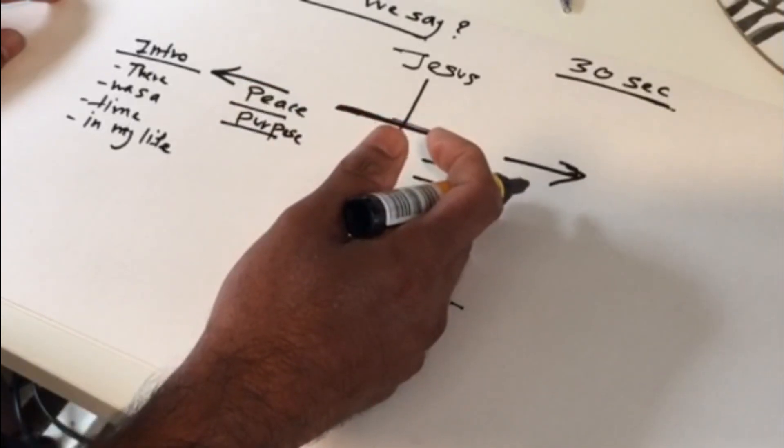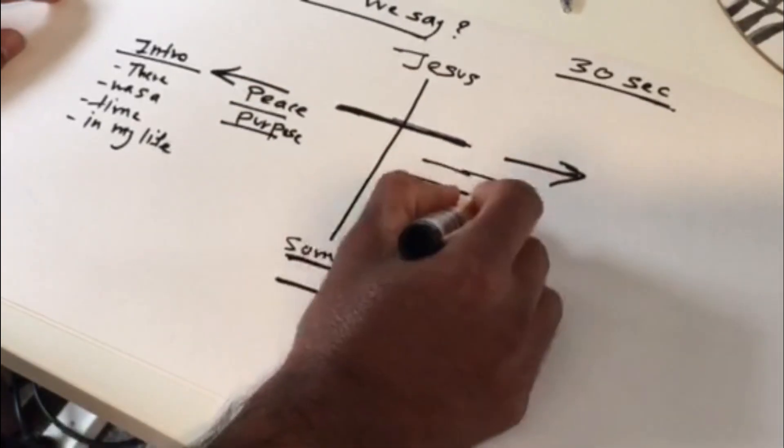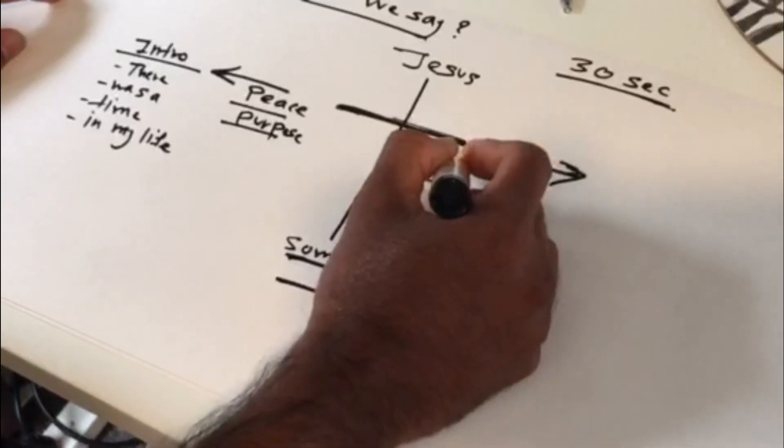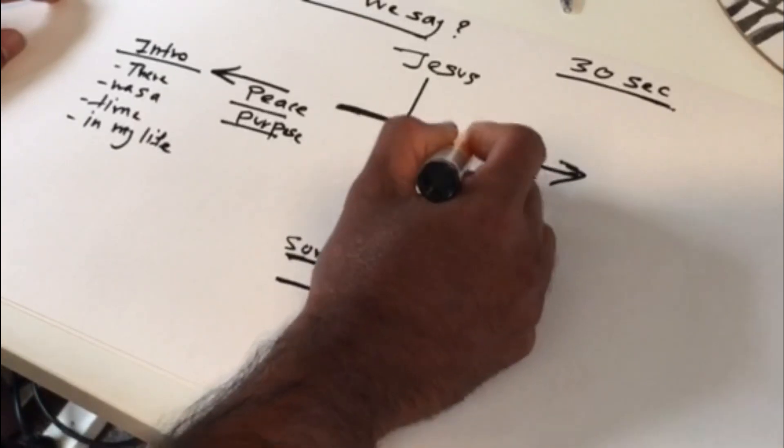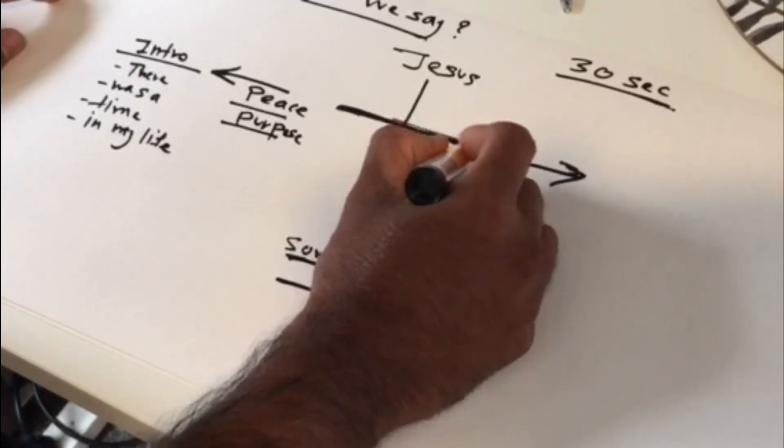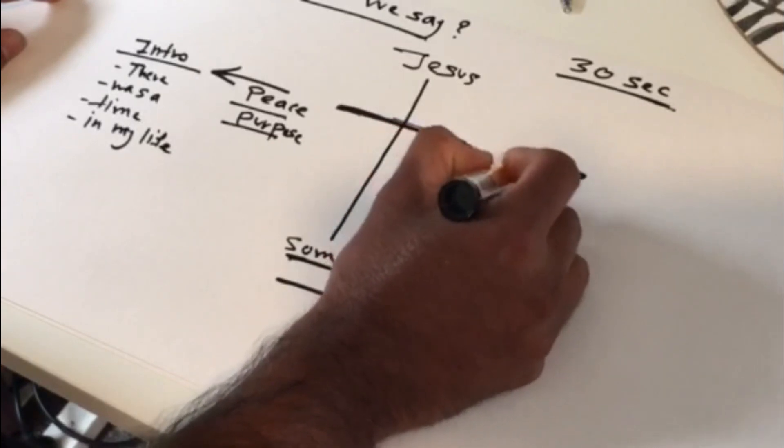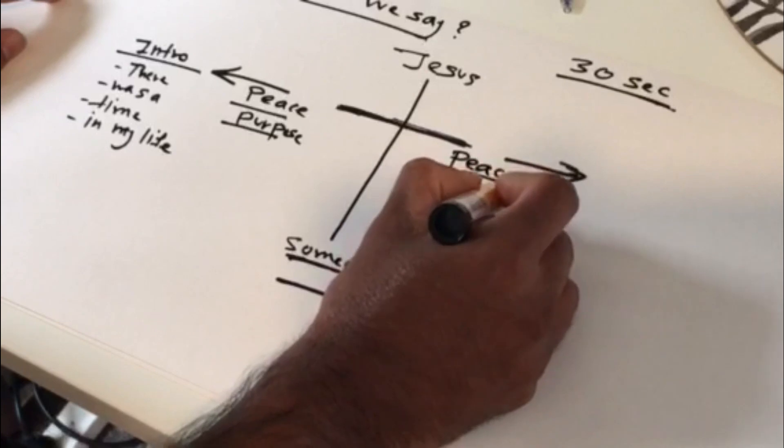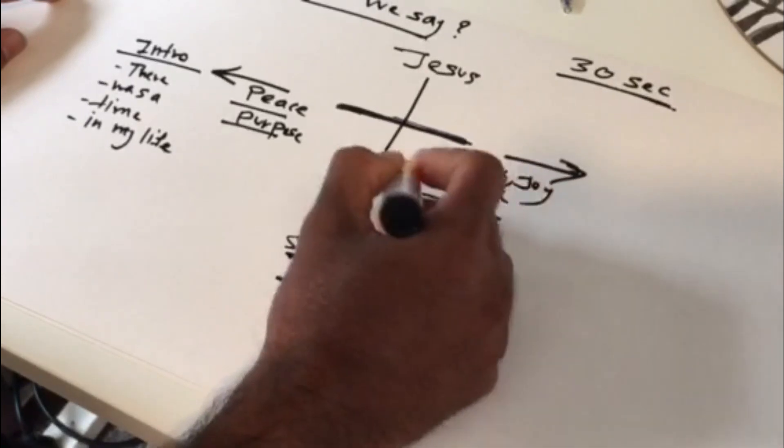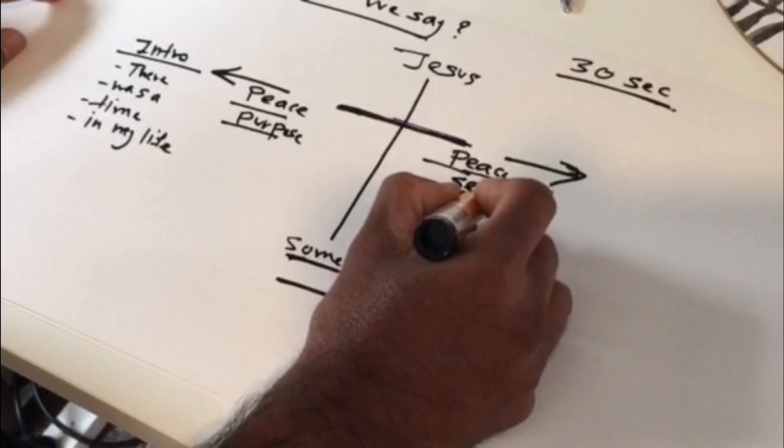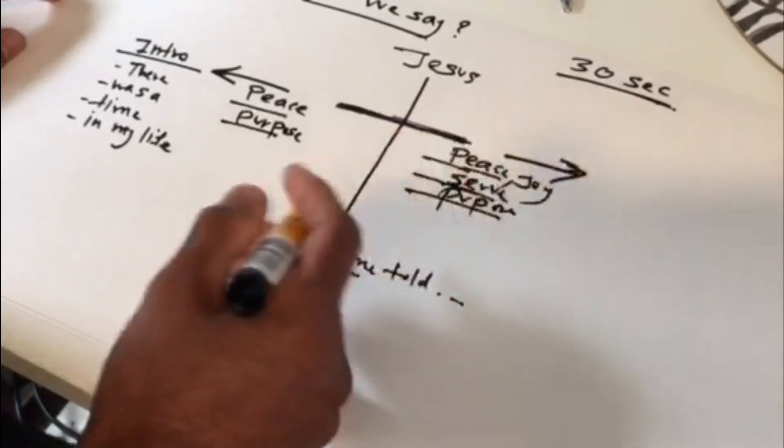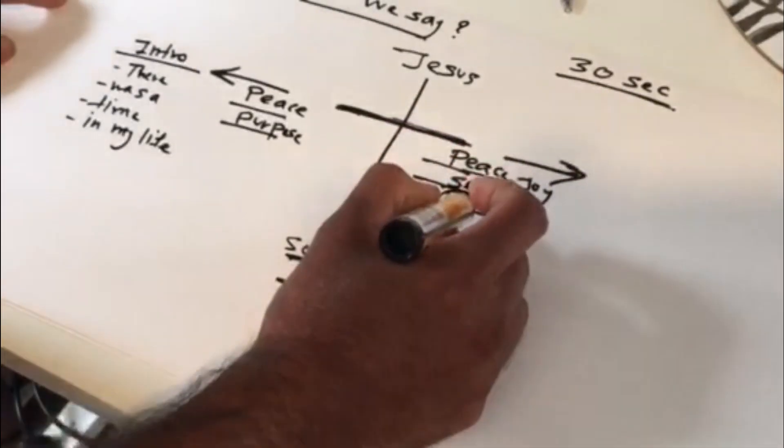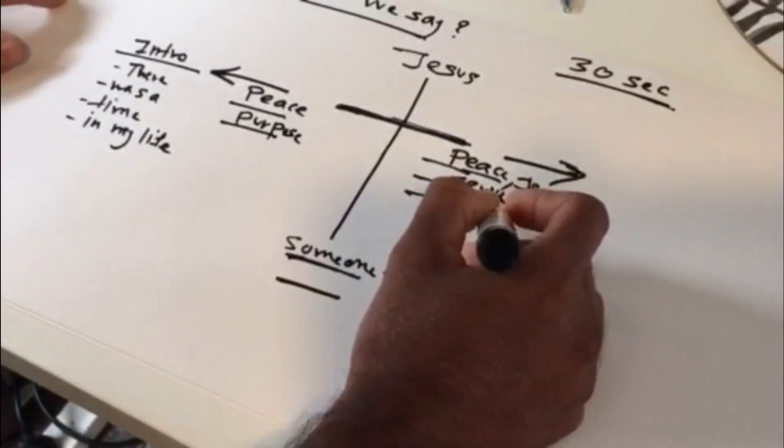After you met with Jesus, a couple of lines just right here. So for me, it was I found the peace, the joy of serving others, serving others, and I had purpose. So I could put a couple of things. I have peace, the joy, and I found the joy of serving others, and I had the purpose.